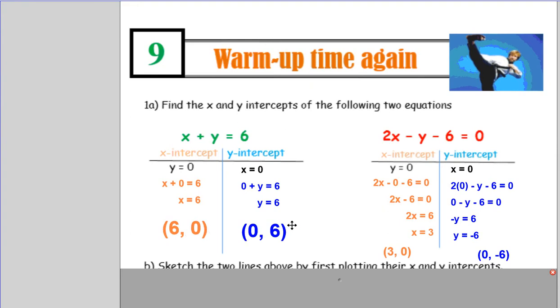And for the other graph, the other line, I hope you've got three zero for the x-intercept and zero negative six. If you didn't, you might want to pause and just look at my working out my reasoning from behind my answers before you move on.